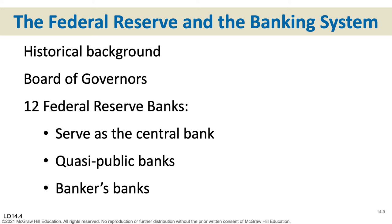The Federal Reserve is set up with a board of governors — seven members. They are appointed by the president, not elected, and it's very important that they not be elected. They are appointed for 14-year terms, which is longer than any sitting president could be in office. 1913 is the date you're going to see in your textbook for the beginning of the Federal Reserve.